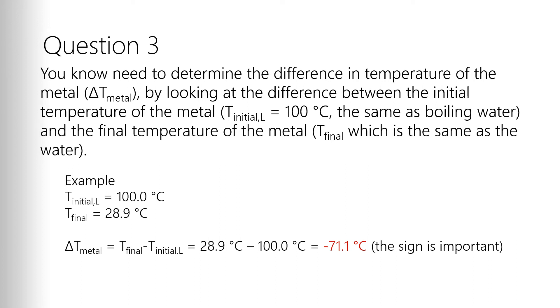Delta T of the metal is a pretty straightforward calculation. But it is important to remember, delta T is always final minus initial. So in this case, that means 28.9 minus 100, giving us a delta T of minus 71.1 degrees Celsius. Minus 71.1 degrees Celsius, meaning it dropped 71 degrees. That's important. The sign is important. We'll talk about why in a second.